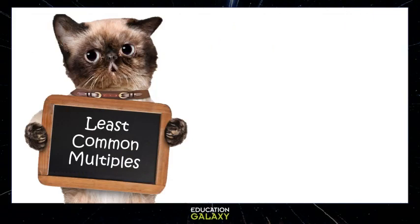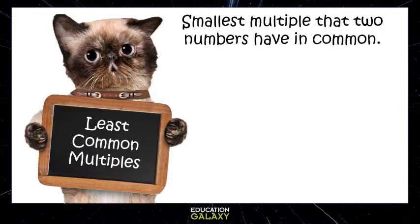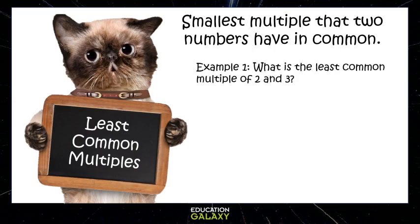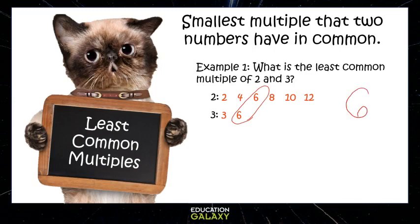The least common multiple is the smallest multiple that two numbers have in common. What is the least common multiple of 2 and 3? Let's list the multiples of 2: 2, 4, 6, 8, 10, 12, and so on. The multiples of 3 are 3, 6 — 6 is on the list for 2! So since the first multiple they have in common is 6, the least common multiple is 6.